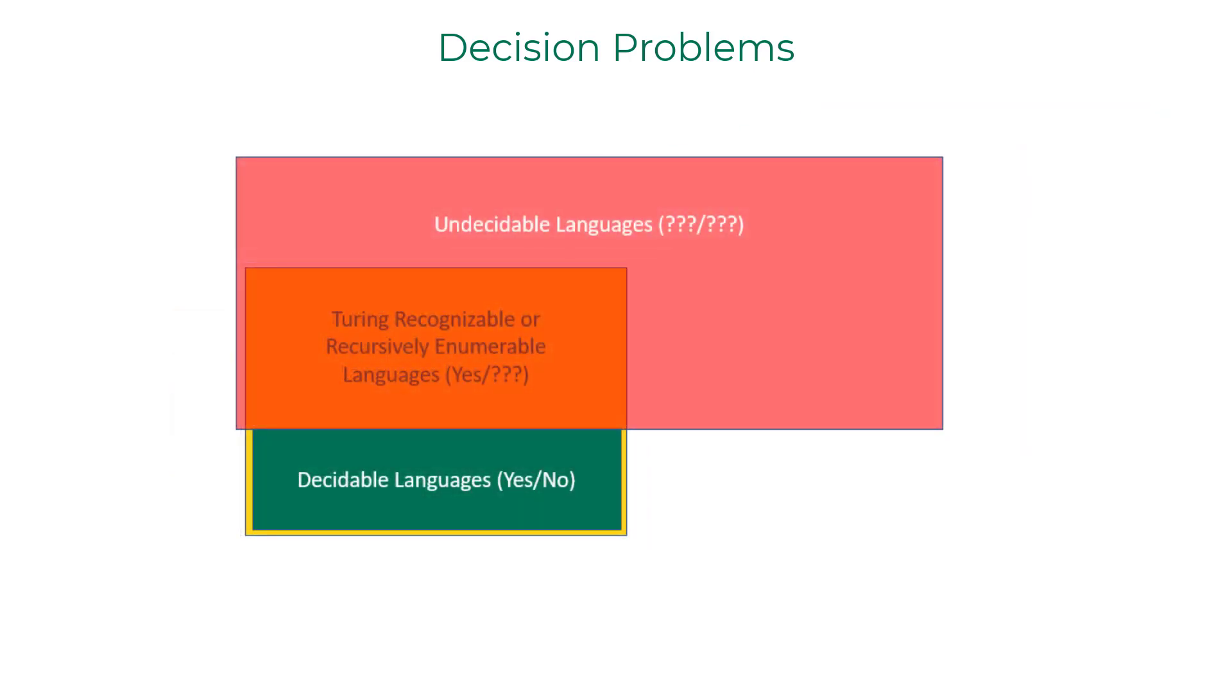And then there are few undecidable languages for which there exists no Turing machine that definitely ends up in accept state or a reject state. Hence, Turing machines cannot even say yes for the input strings that belong to a certain language. These are the class of problems that are completely undecidable.